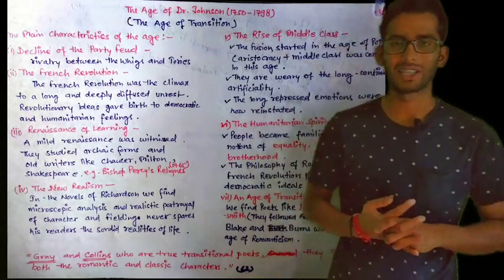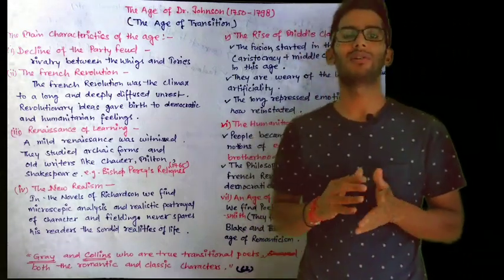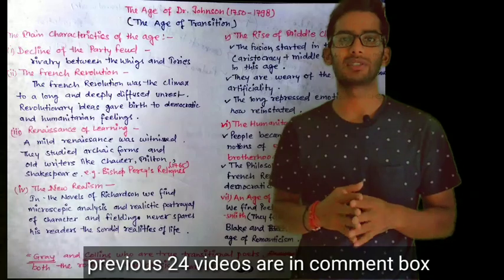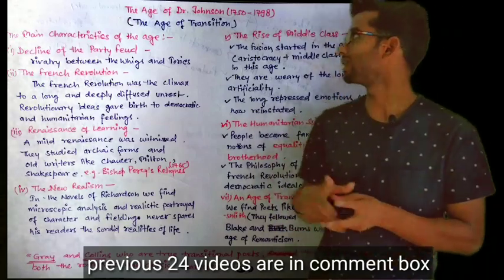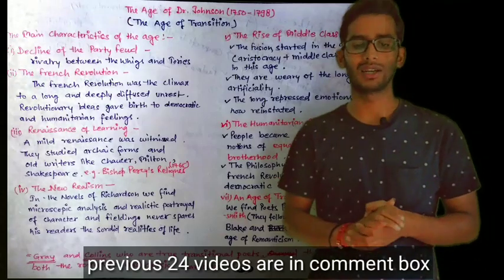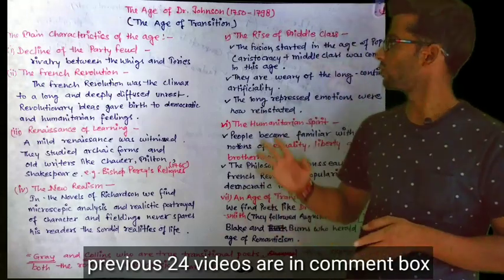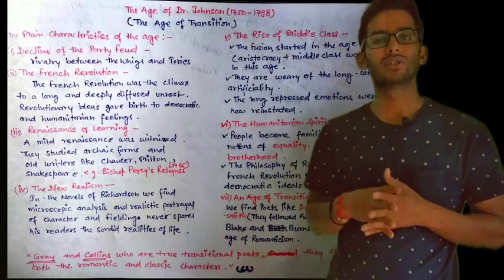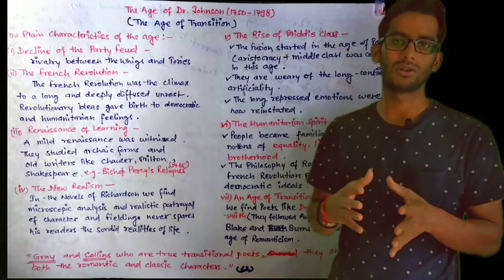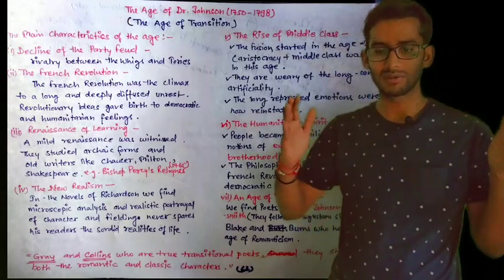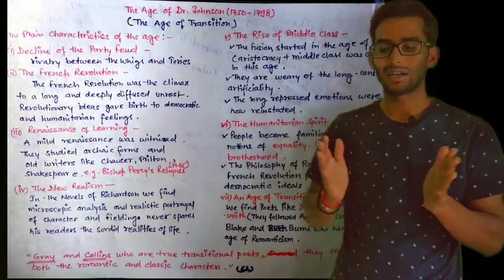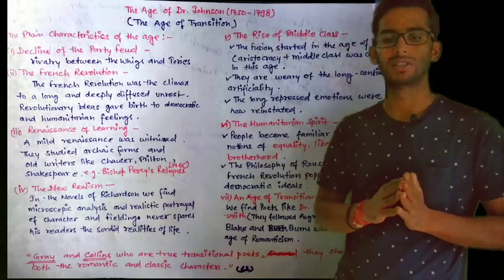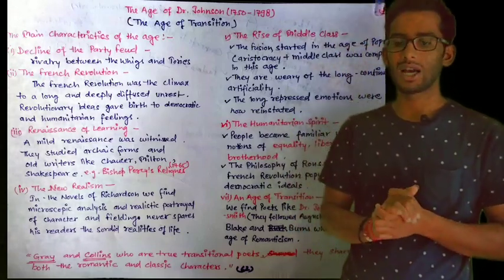Hello everyone, welcome again to my channel. As you know, we are doing a history of English literature series and summary series, so hopefully you have watched all previous uploads. Today we are going to talk about the Age of Dr. Johnson. This is also called the Age of Transition — it is the period between two periods that consists of the qualities of both ages.